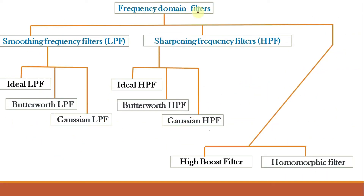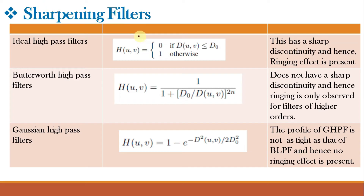Frequency domain filters can be broadly classified into two categories: low pass filters and high pass filters. Low pass filters — which we have already studied — are of three types: ideal, Butterworth, and Gaussian. In this video class we will study high pass filters or sharpening frequency filters, that is ideal high pass filter, Butterworth high pass filter, and Gaussian high pass filter.